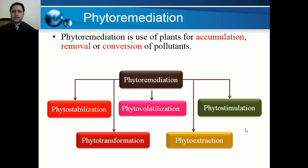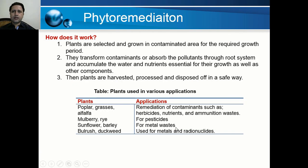Another system is phytoremediation — the use of plants for accumulation, removal, or conversion of different types of pollutants. Specific plants are selected and grown on polluted soil for a particular time period, then harvested and disposed of safely. There are different types of phytoremediation: phytostabilization, phytovolatilization, phytostimulation, phytotransformation, and phytoextraction.